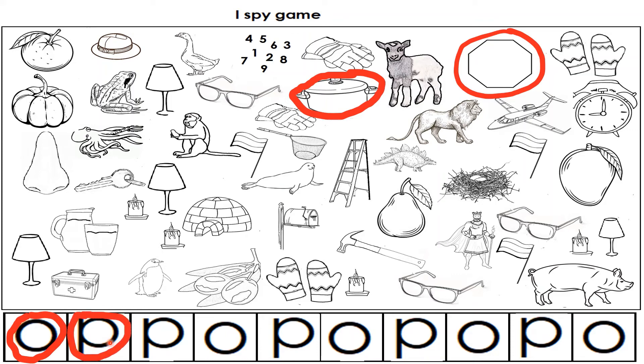Now you are going to find rest of the pictures starting with O and P and circle all these letters. And when you are done, we can move on to next one.